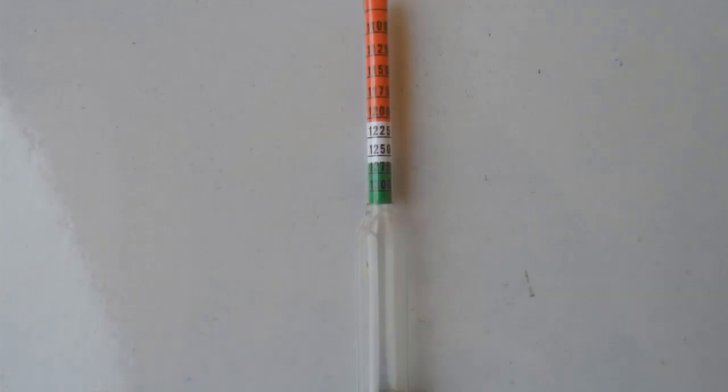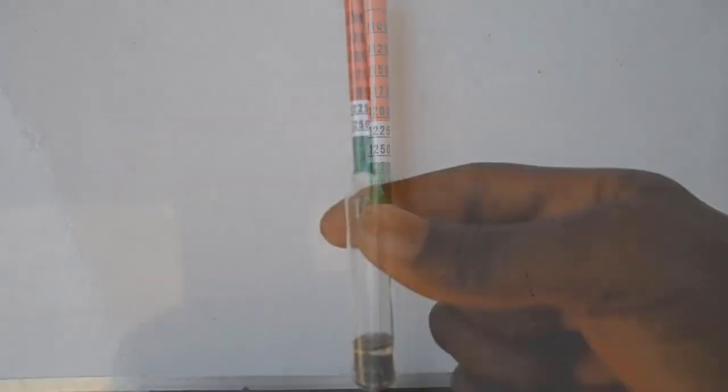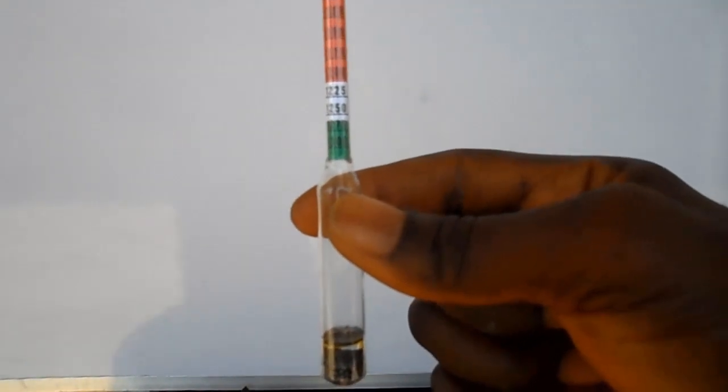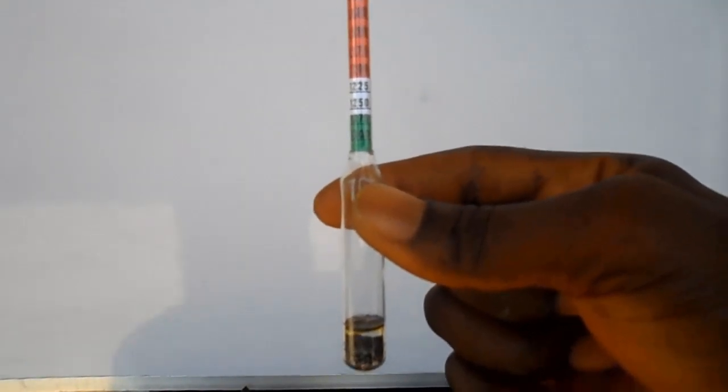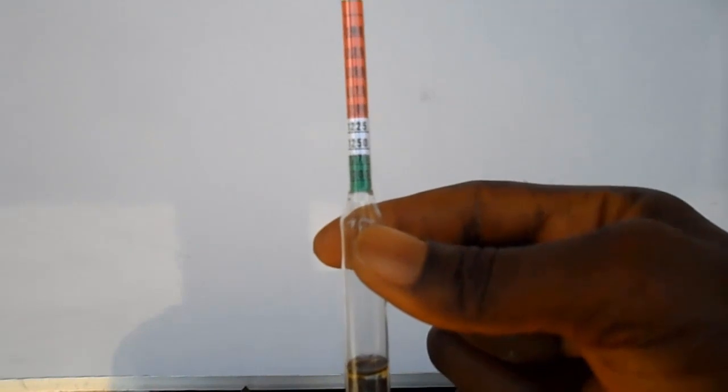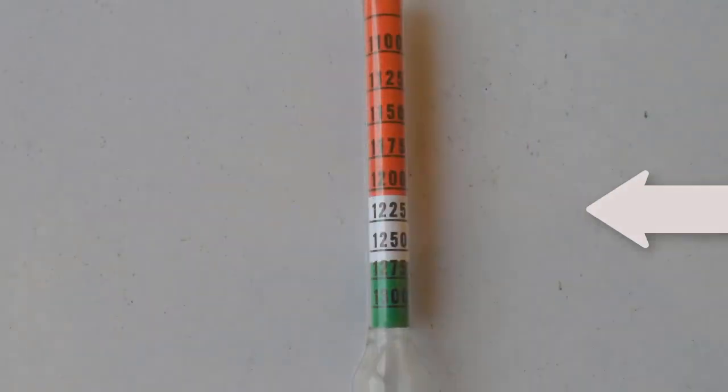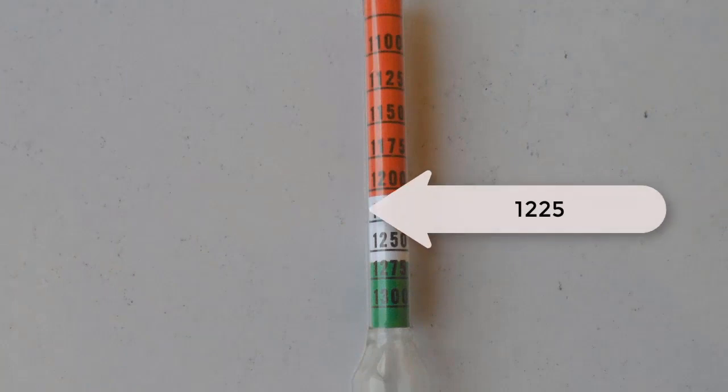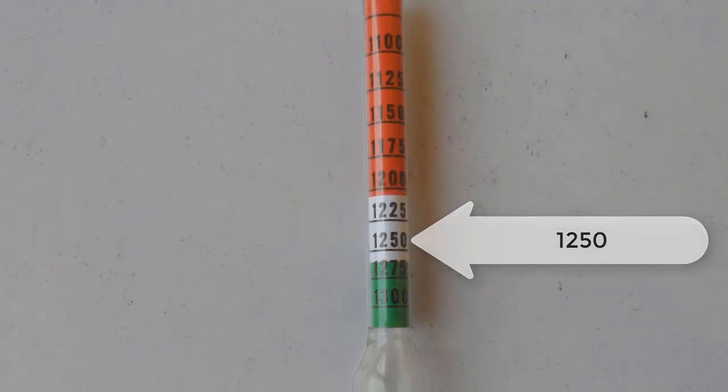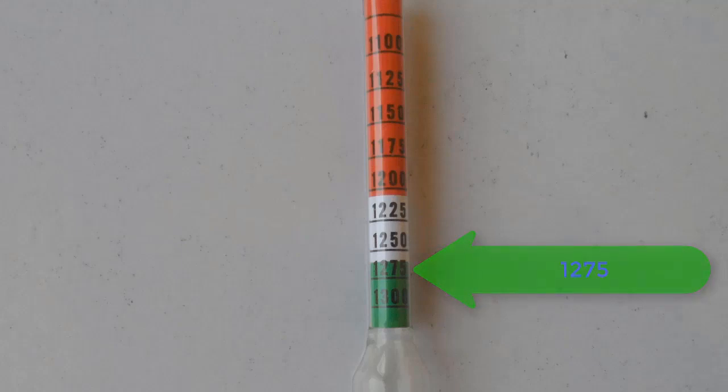The color-coded hydrometer is calibrated with three different colors: red which is at the top, followed by white which is at the middle, and green color which is at the bottom. The white calibration starts with 1225 and ends with 1250, while the green calibration starts with 1275 and ends with 1300.